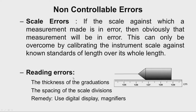Reading error happens because of the thickness of the gradation and the line spacing between two divisions. In the picture, we have a long component whose length is to be measured using a steel rule. The end of the workpiece is somewhere between 128.8 and 128.9, but very close to 128.9. The operator will take a dimension of 128.9 plus or minus 0.1 cm. In this case that 0.1 cm becomes the reading error.